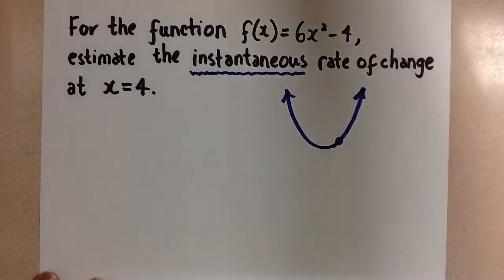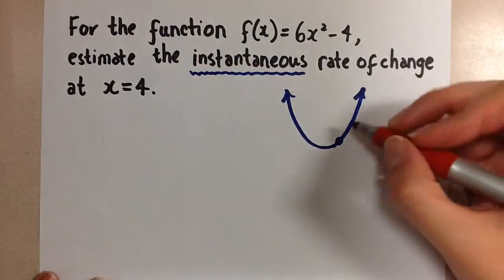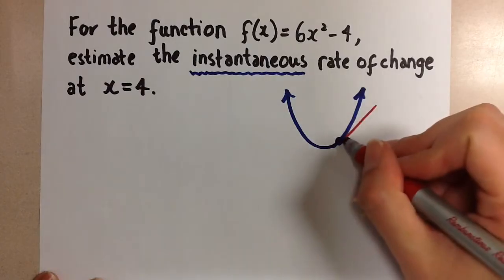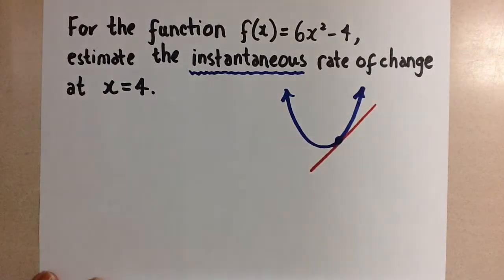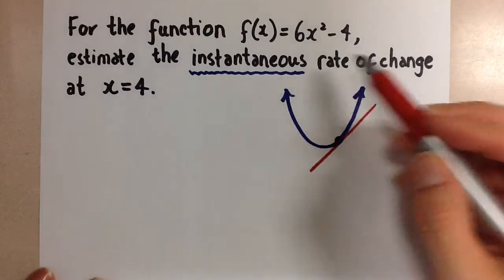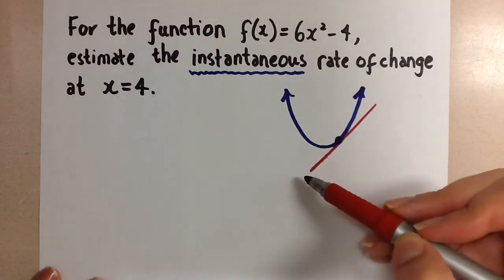So the secant line goes through two points. The tangent line is the line that just touches the graph at that point. And then to find the instantaneous rate of change, we find the slope of that line.